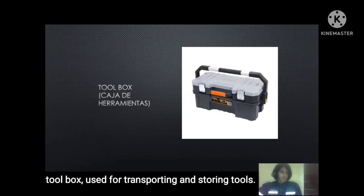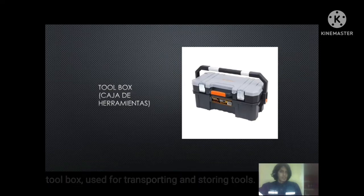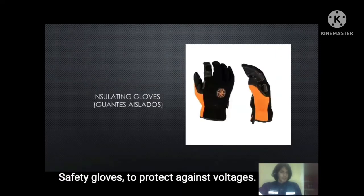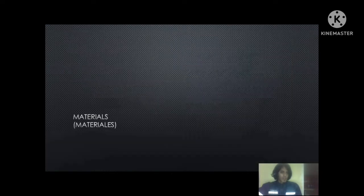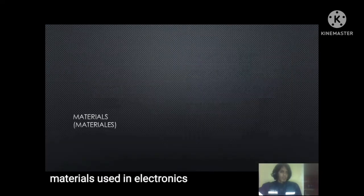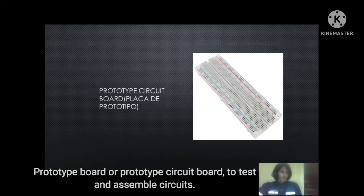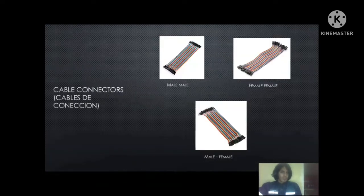Tool board: used for transporting and storing tools. Safety glass: used to protect against voltage. Materials used in electronics include the prototype board, used to test and assemble circuits.